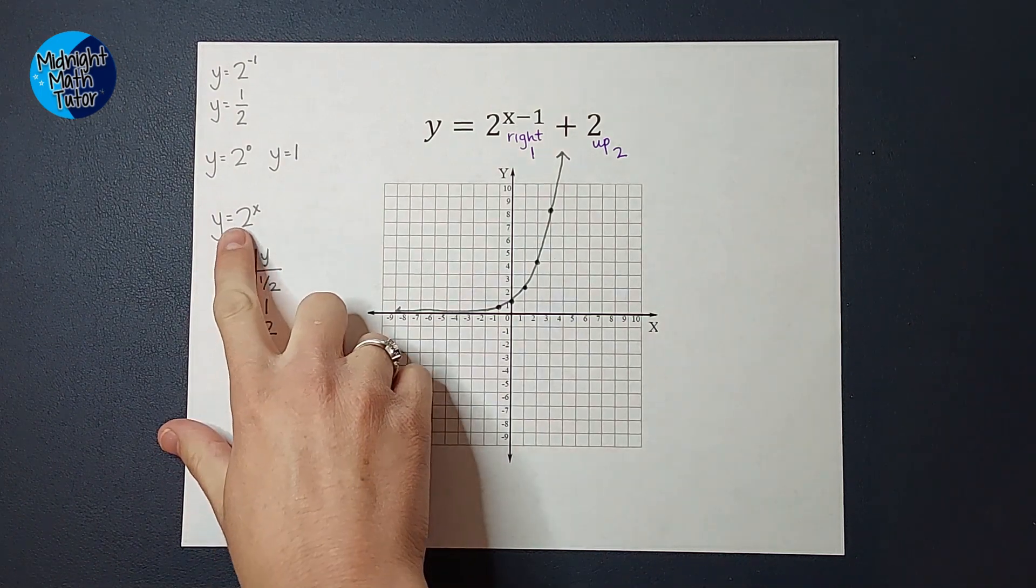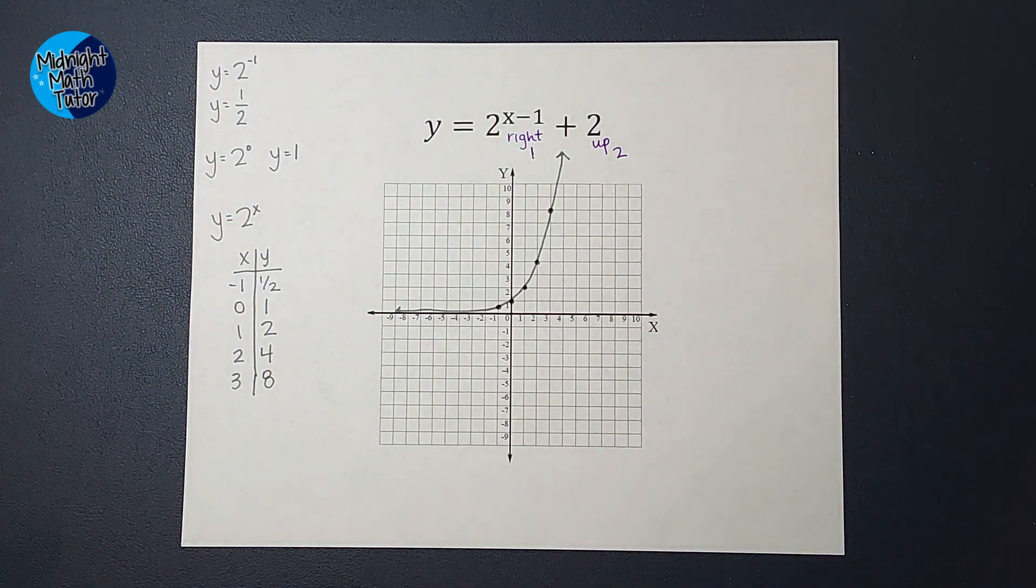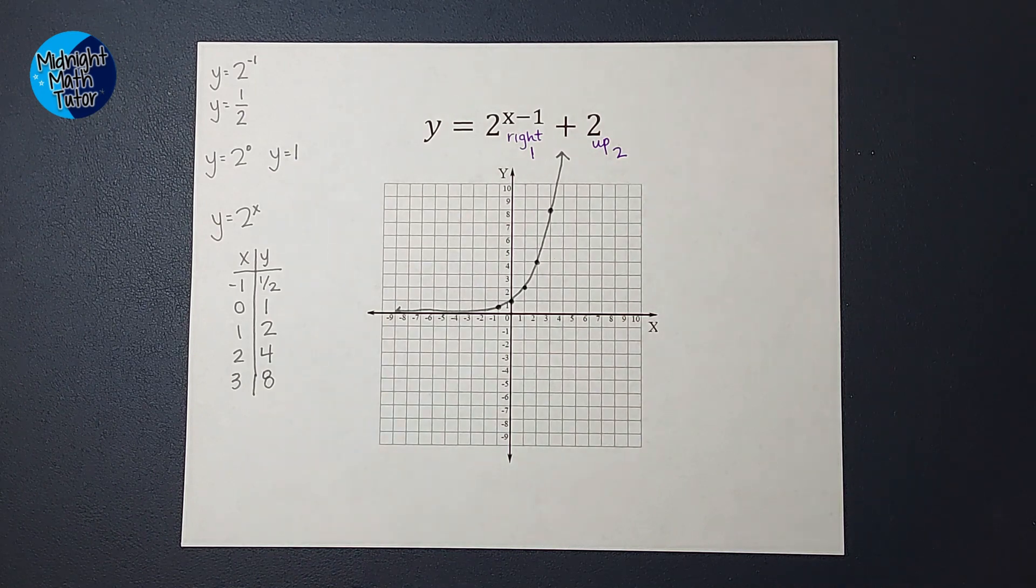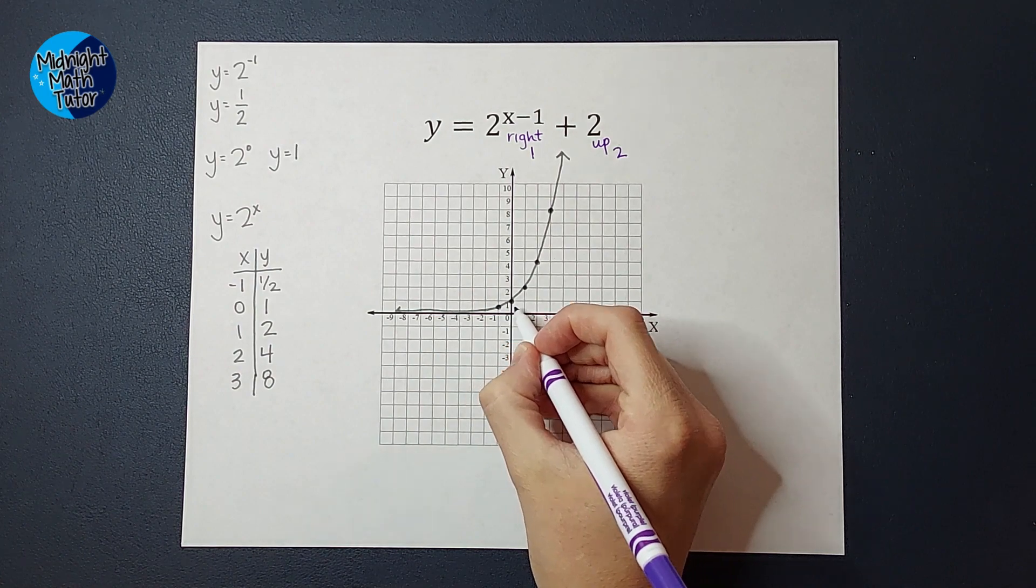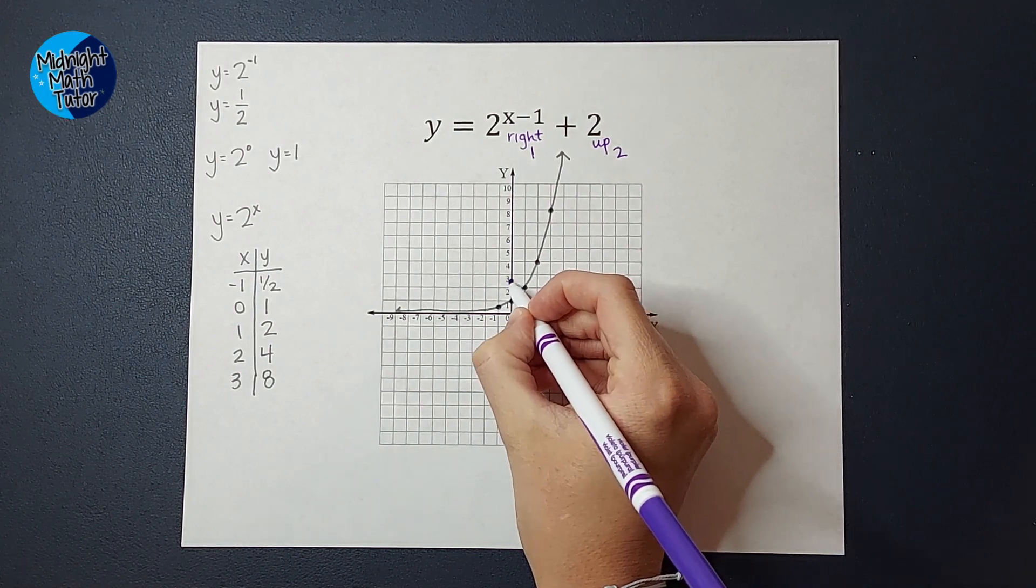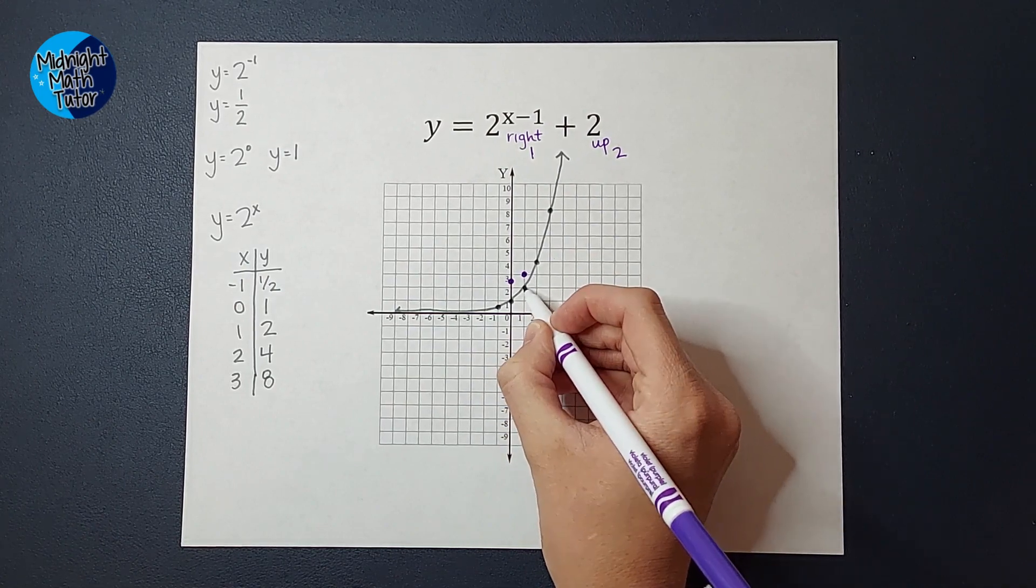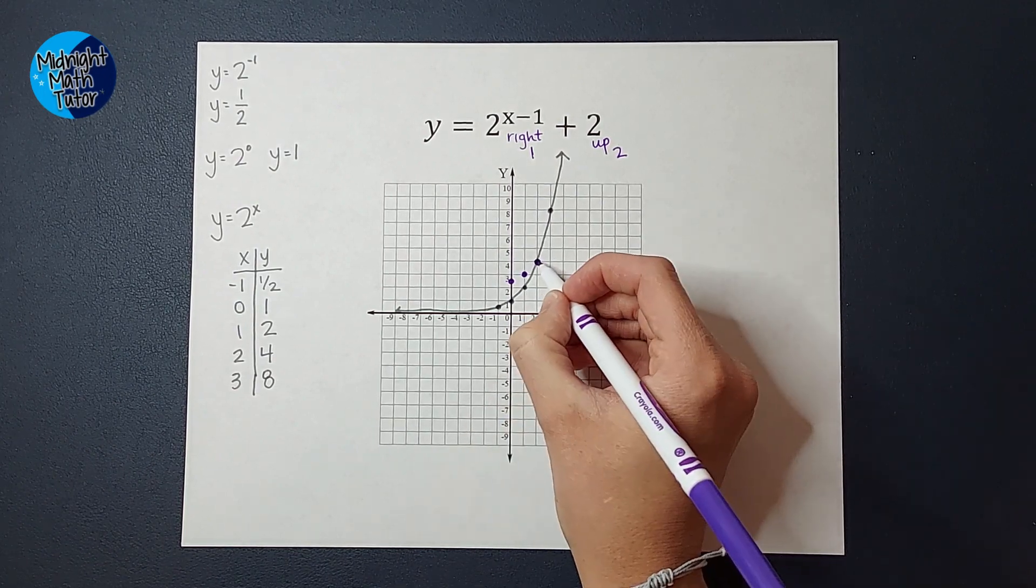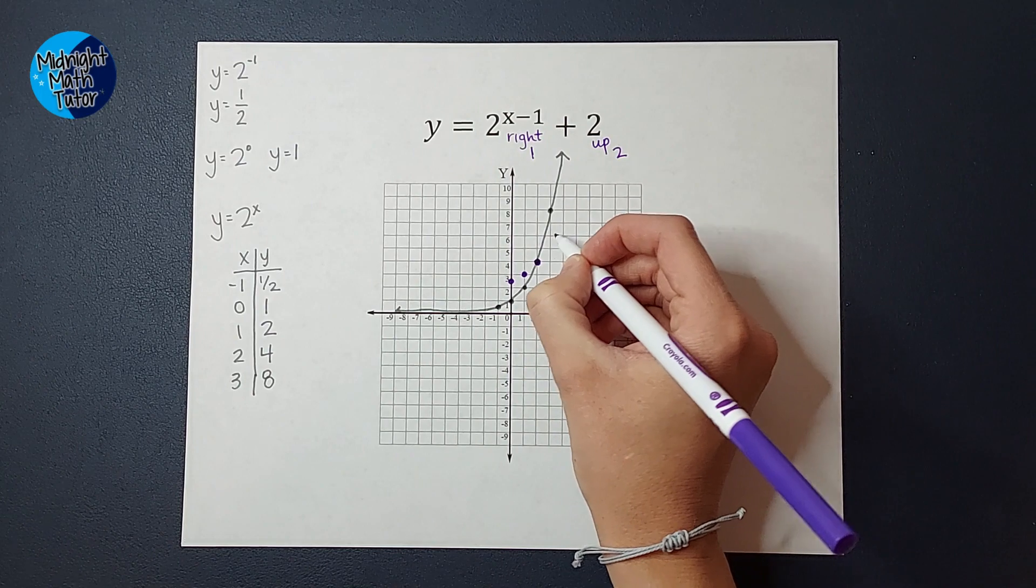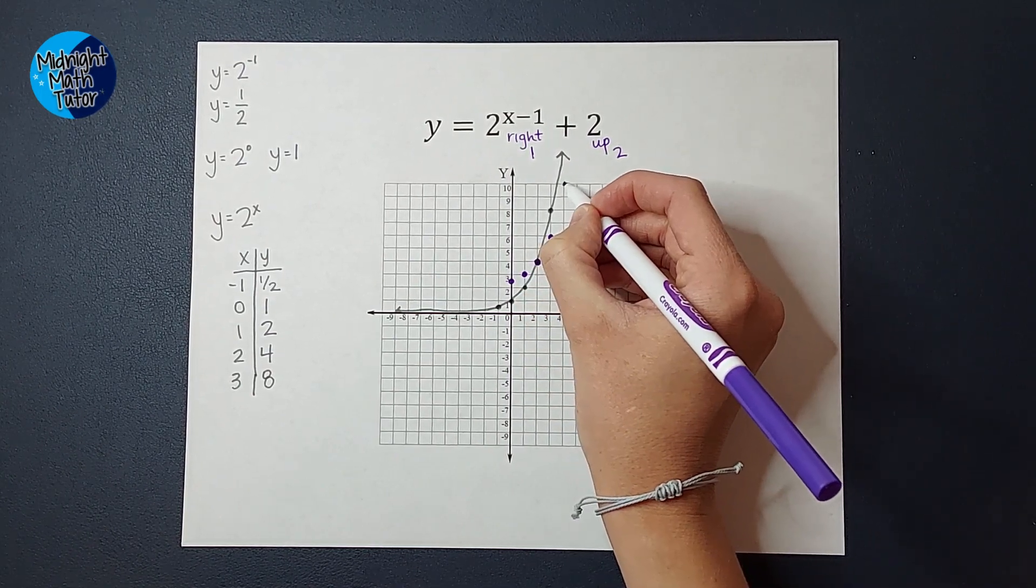Now, that is y equals 2 to the power of x, but I want this guy. So what is going to happen to this graph is it is going to shift to the right 1 and up 2. So I can do that with each point if I want. So I'm going to start here, go to the right 1, up 2. Here's this point, to the right 1, up 2. This point, to the right 1, up 2. Oh, and that's actually going on that guy. Now this point, to the right 1, up 2. And this guy, to the right 1, up 2.